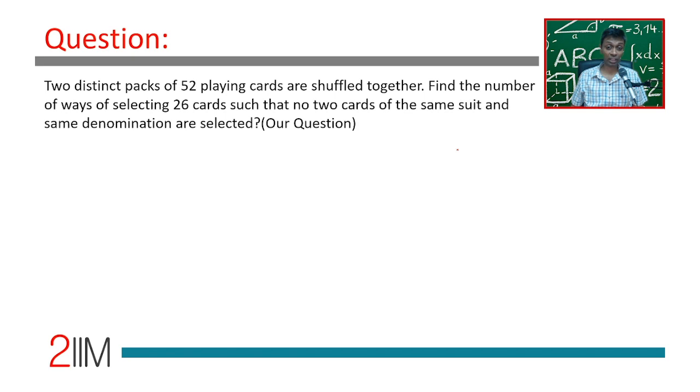Two distinct packs of 52 playing cards are shuffled together. Find the number of ways of selecting 26 cards such that no two cards of the same suit and same denomination are selected. Brilliant! 52 cards, two distinct packs.